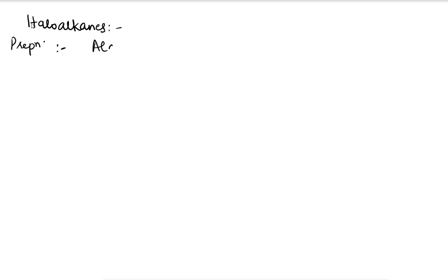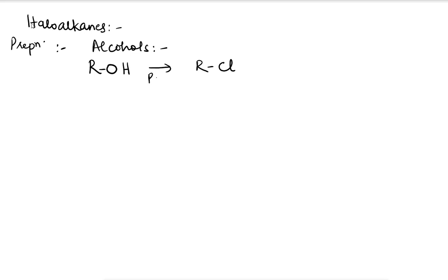First, preparation from alcohol. I want to convert ROH to RCl. This can be done with the help of PCl5, PCl3, or SOCl2. I can also do it with HCl plus ZnCl2.